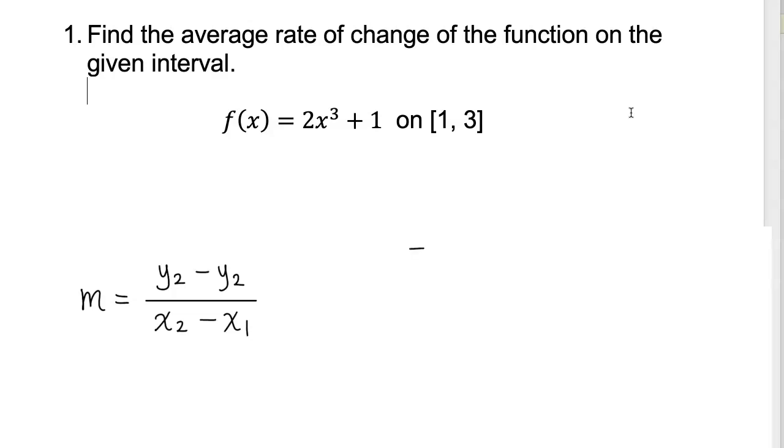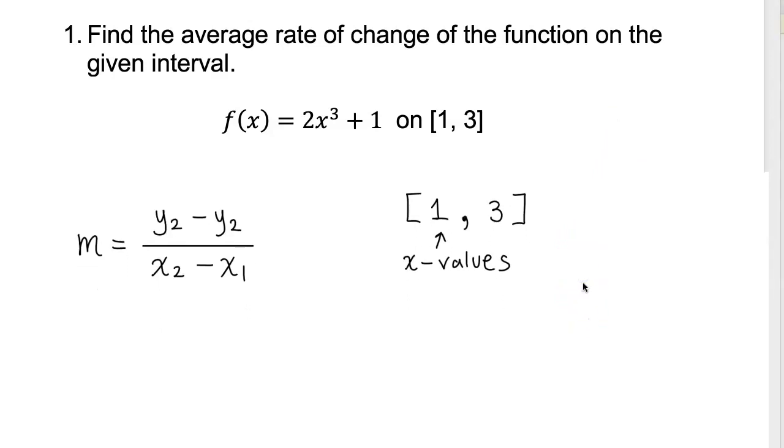Now when you look at the interval they gave us, 1 to 3, these are two different x values. These are both x values. Now, did they give us y values? They did not give us the y values just yet. So we have to first find the corresponding y values for 1 and 3 so that we can actually use this slope formula to find the average rate of change.